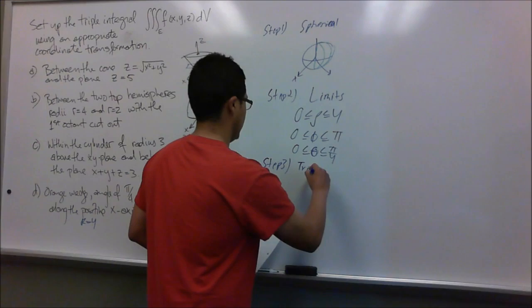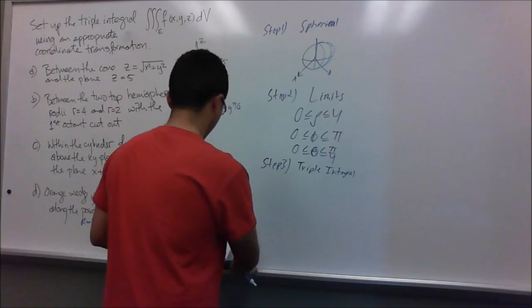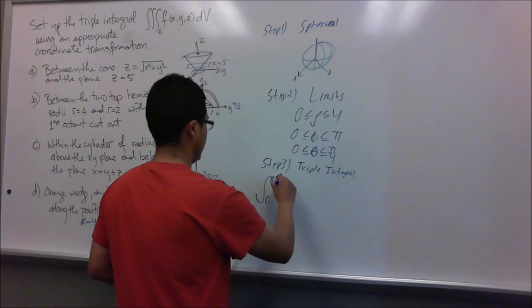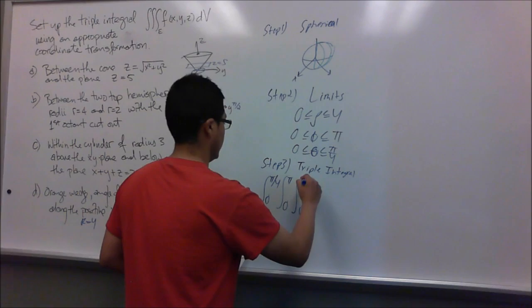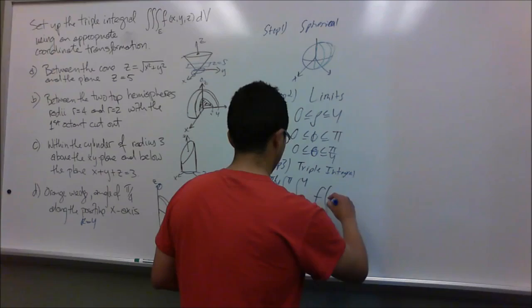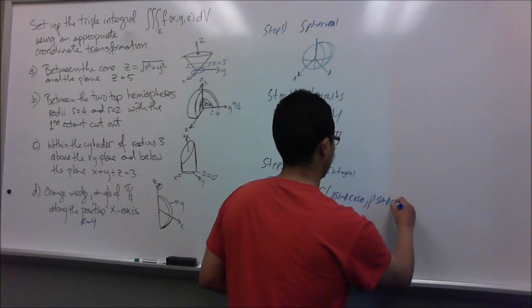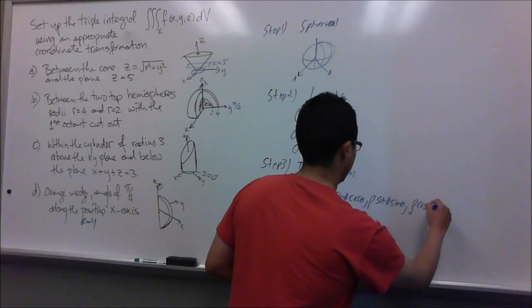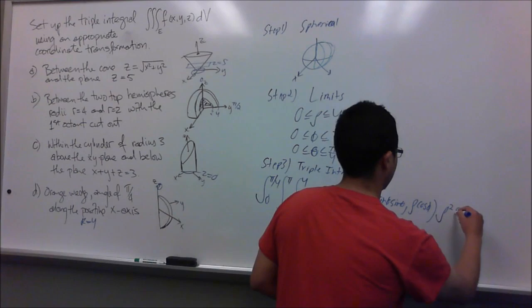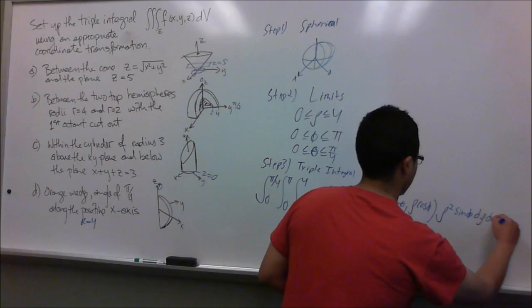Step three: we set up our triple integral. The limits go from 0 to pi over 4 for theta, 0 to pi for phi, and 0 to 4 for rho. The integrand is f of rho sine phi cosine theta, rho sine phi sine theta, rho cosine phi, multiplied by the Jacobian which is rho squared sine phi, then d rho d phi d theta.